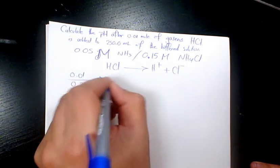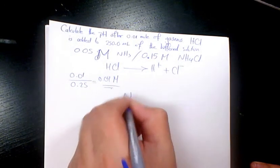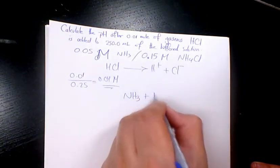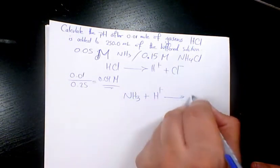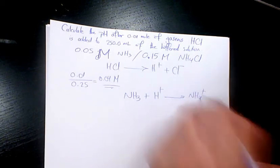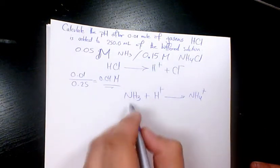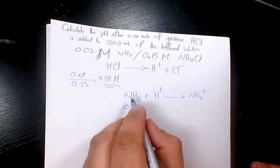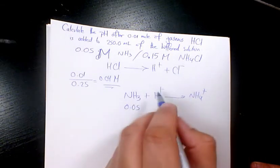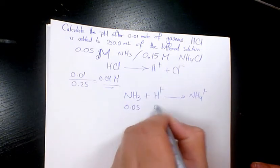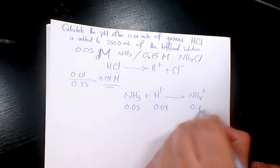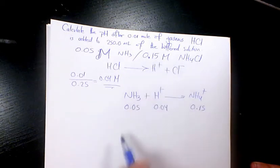When ammonia reacts with the proton, it gives NH4+. Initially we have 0.05 molar ammonia, 0.04 molar proton, and 0.15 molar NH4+ based on what we have here.